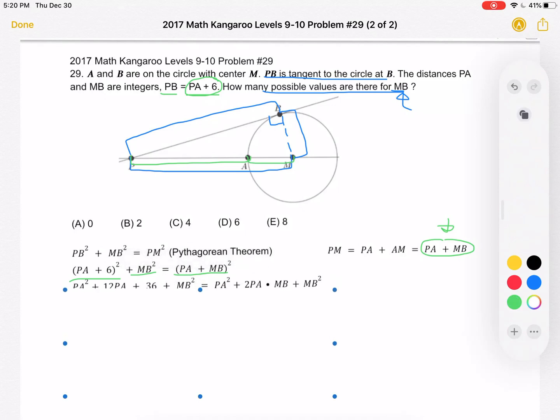So now we can write everything out and we see that we have PA squared on both sides so we can cancel that out and we also have MB squared on both sides. So we end up with 12PA plus 36 is equal to 2PA times MB, divided by 2 on both sides to get 6PA plus 18 is equal to PA times MB.